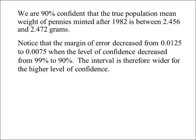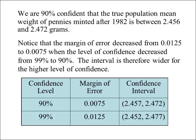The margin of error decreased from 0.0125 to 0.0075 when the confidence level decreased from 99% to 90%. The interval is therefore wider for the larger level of confidence. Increasing the confidence level increases the margin of error, resulting in a wider confidence interval.